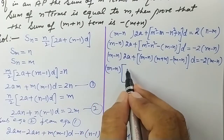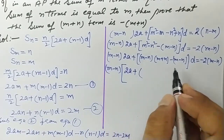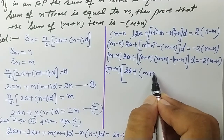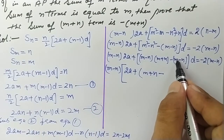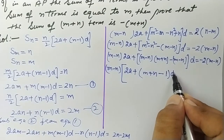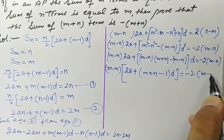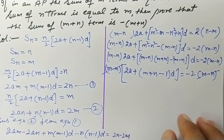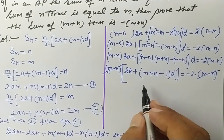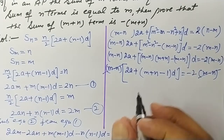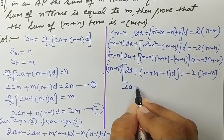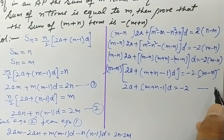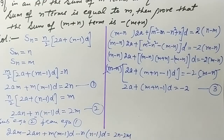Since (m−n) appears on both sides, it can be cancelled. What remains is: 2a + (m+n−1)d = −2. This is equation number 3.